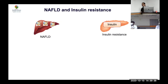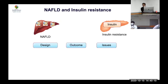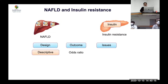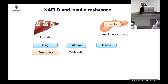If you were designing a study to examine how NAFLD is linked with insulin resistance, what design would you use? Conventionally, you could do a descriptive study: take obese children, measure insulin resistance, classify them into NAFLD or no NAFLD, and see the odds ratio of having high insulin resistance. But that only gives you an odds ratio.